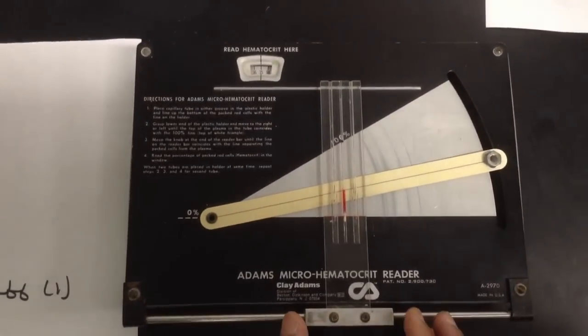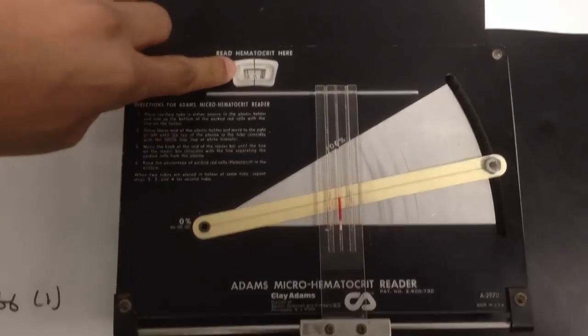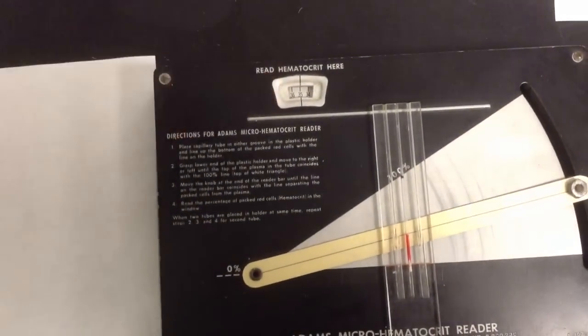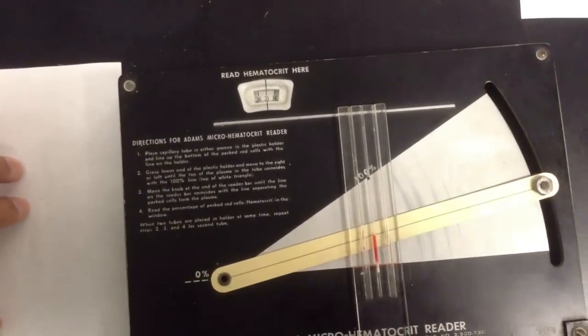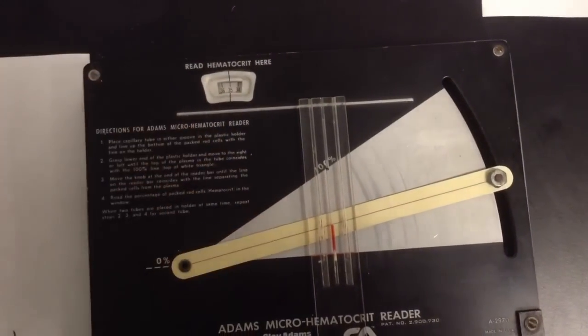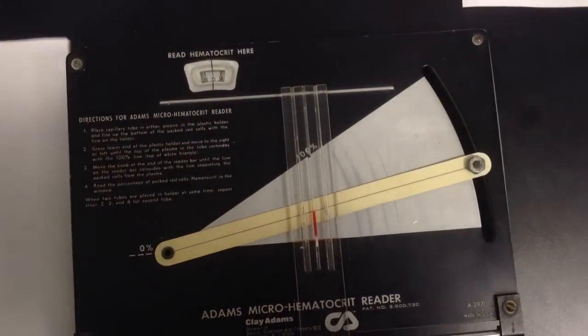And that's the perfect level we got and it is 35 hematocrit level. So that's your hematocrit level. That's how you get it.